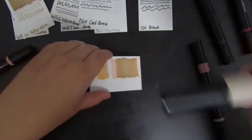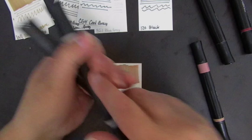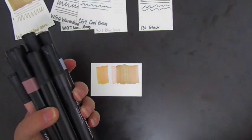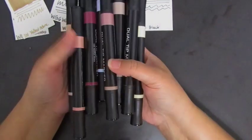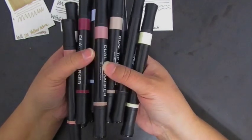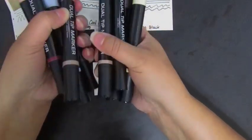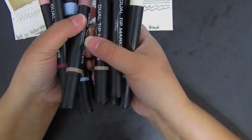So basically with alcohol markers, it pushes the other color down. So whatever color you layer on top is going to be the prominent color. So at least that's what I found using alcohol markers over the years.